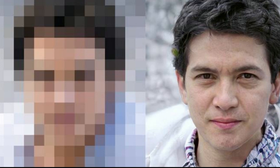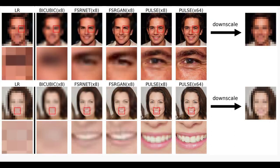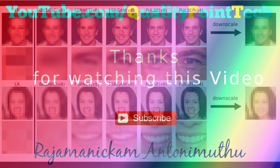The researchers asked 40 people to rate 1,440 images generated via PULSE and five other scaling methods on a scale of 1 to 5, and PULSE did the best, scoring almost as high as high-quality photos of actual people.